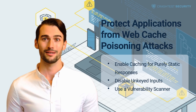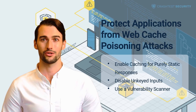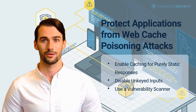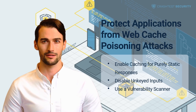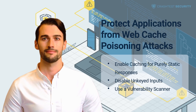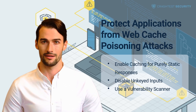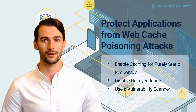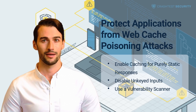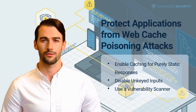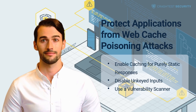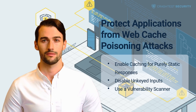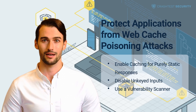Disable unkeyed inputs. Developers should identify inputs included in the HTTP response but not part of the cache key. Attackers typically use these unkeyed headers to embed their malicious responses into the request bodies. To mitigate such attacks, web developers should remove unkeyed inputs from the cache layer, add a cache key, or disable unkeyed inputs altogether.